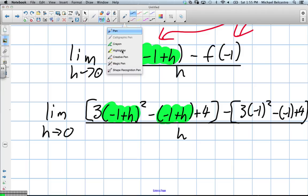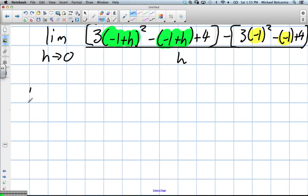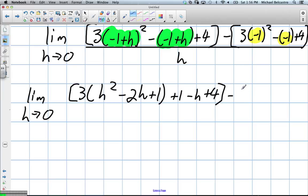Does that make sense? We replaced the x values with our negative 1 in this case. That's what we did. So now we're going to work this stuff out on top. Specifically the stuff on top. So the limit as h approaches 0. Well, this will become 3. That's going to be h squared minus 2h plus 1. I just quickly foiled that part in my head. This will become plus 1 minus h plus 4. And over here, do you know what we're going to get?